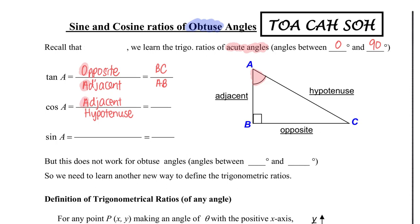I'd like to highlight the starting letters. In this particular triangle, cosine translates to side AB over side AC. And for the sine ratio, it is the opposite side over the hypotenuse side — O over H — so that will be BC over AC.